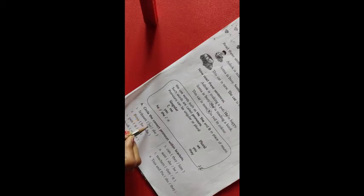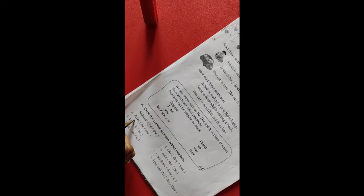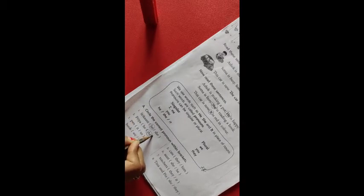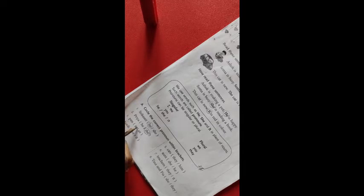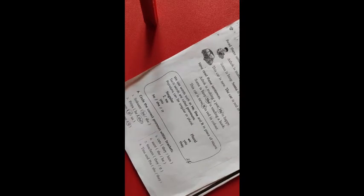Now there are some examples — let's circle the correct pronoun within brackets. The first is Shrikant — for a boy we use 'he'. For a girl we use 'she'. So for Priya, which is a girl's name, we circle 'she'. For pen, since it is a thing, we use 'it'. Book is also a thing, so again we circle 'it'.